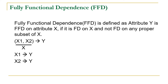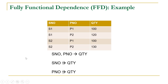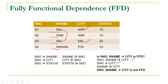If Y is not dependent on any subset, then it satisfies the requirement of fully functional dependence. In the SP example, quantity is fully functional dependent on the combination of S number and P number because it is functionally dependent on this combination and not functionally dependent on any subset of X. In the S relation example, S number and S name to city is not fully functional dependent because city is dependent on one subset of X — that is S number.